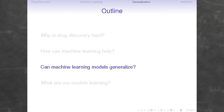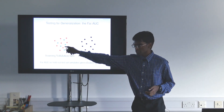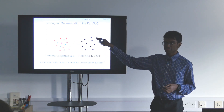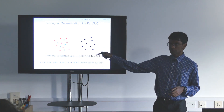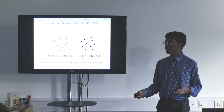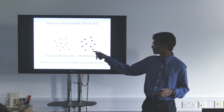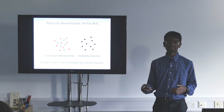Let's start with generalization. One of the key goals of using machine learning was to expand from the small region of chemical space accessible to screens to a much larger region. To test whether we can actually do this, we hold out a test set that is guaranteed to be a certain distance away from all molecules in the train and validation sets. We measure the AUC — a measure of accuracy — on this held-out test set as a measure of the model's ability to generalize. If our model generalizes well, accuracy on the validation set would be roughly the same as on the test set. If it generalizes badly, the far AUC on the test set would be much worse.